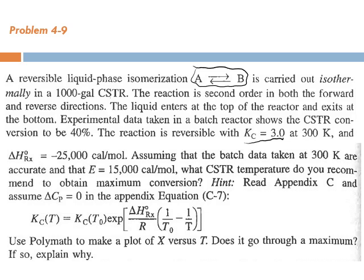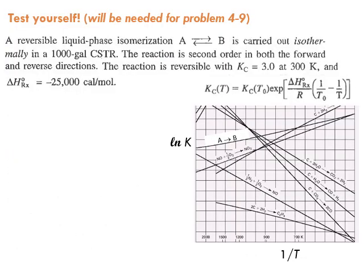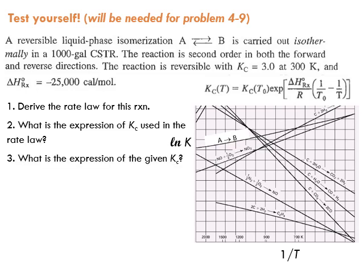It says use Polymath to make a plot of X versus T. Does it go through a maximum? If so, explain why. So plot X versus T where T is the CSTR temperature. Of course, I'm operating isothermally, so we have one T in the feed, the same T inside the reactor, the same T exiting the reactor. However, every time I'm going to try to operate at a different temperature and then see what would be the X at the exit of the reactor.